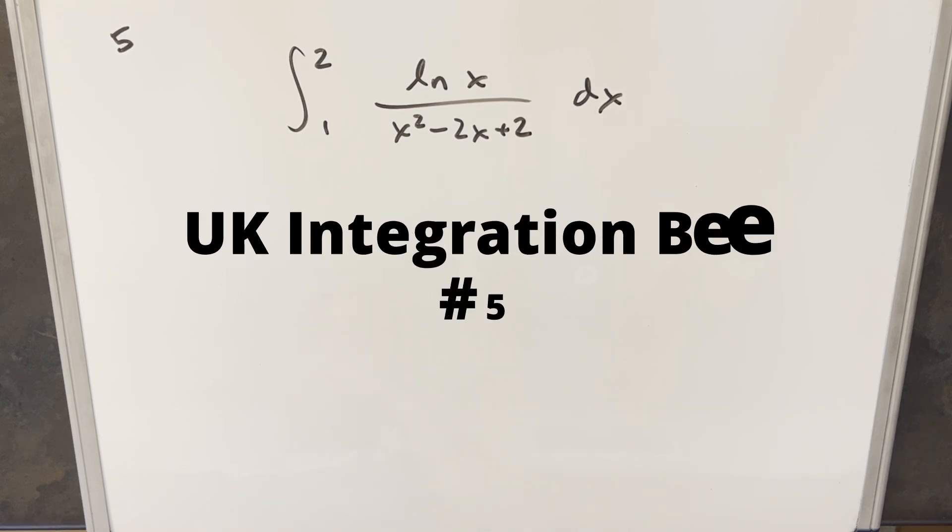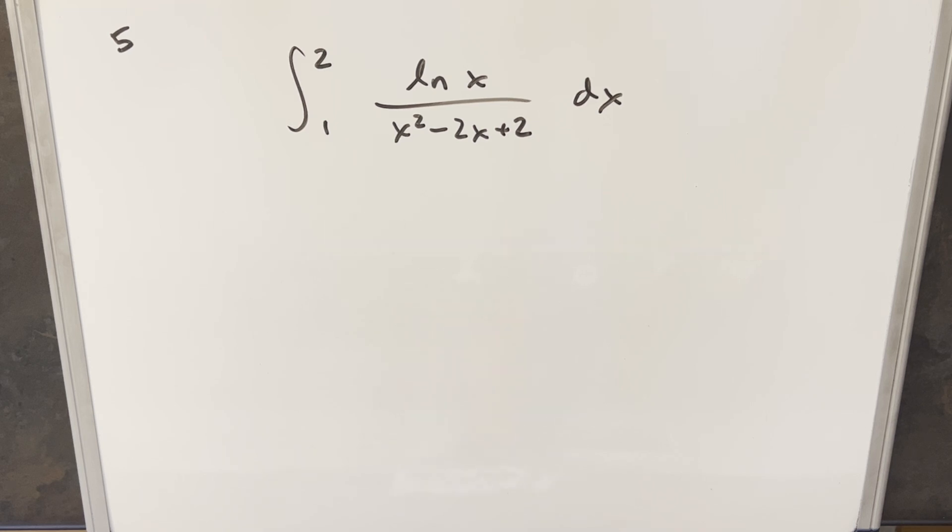Okay, I'm giving you an interesting integral. This one's from the UK Integration B, problem number 5. We have the integral from 1 to 2, natural log x over x squared minus 2x plus 2 dx.